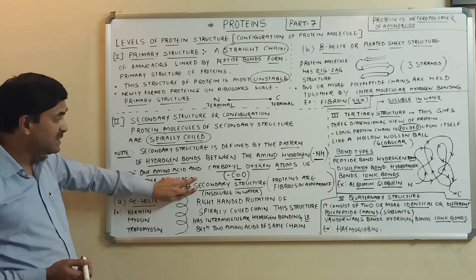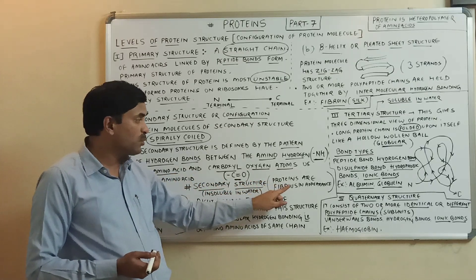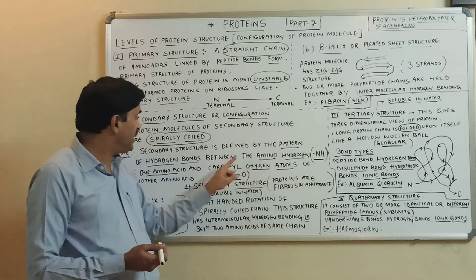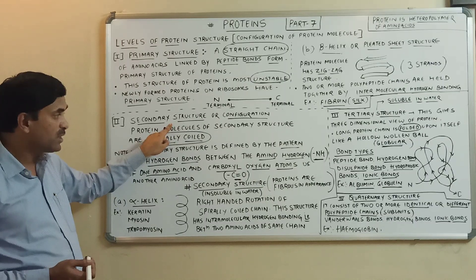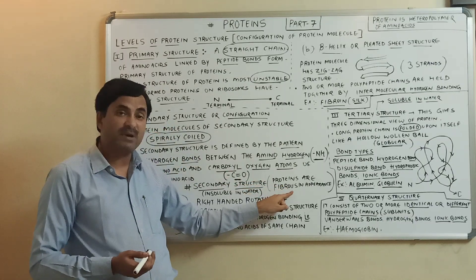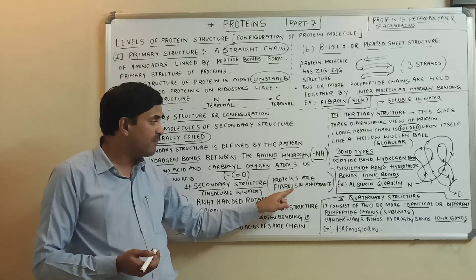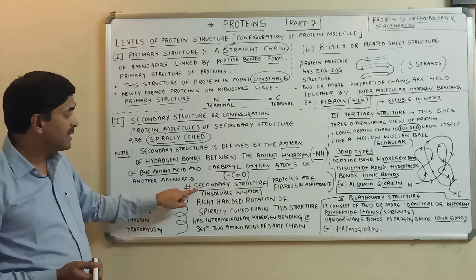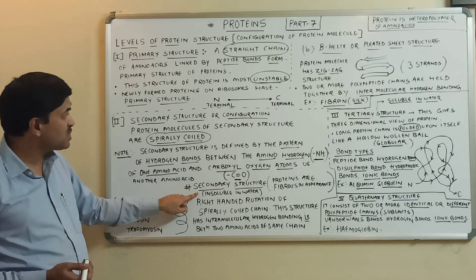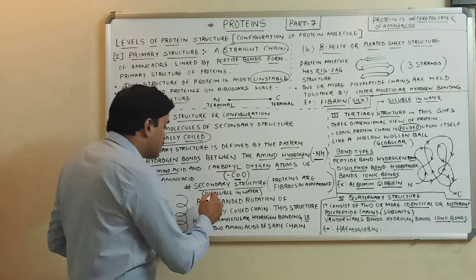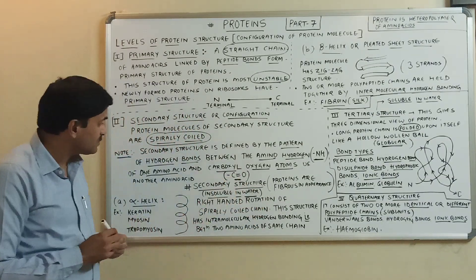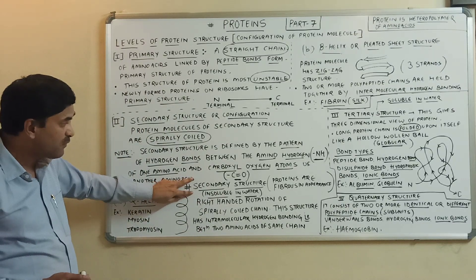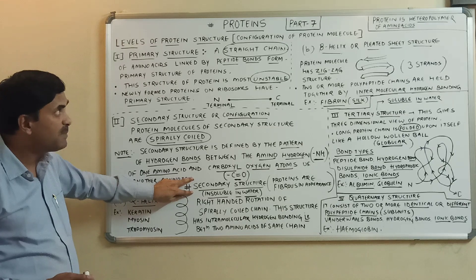Remember that the secondary structure of proteins is fibrous in appearance. These spirally coiled proteins have a fibrous structure, and proteins with a secondary structure are insoluble in water.